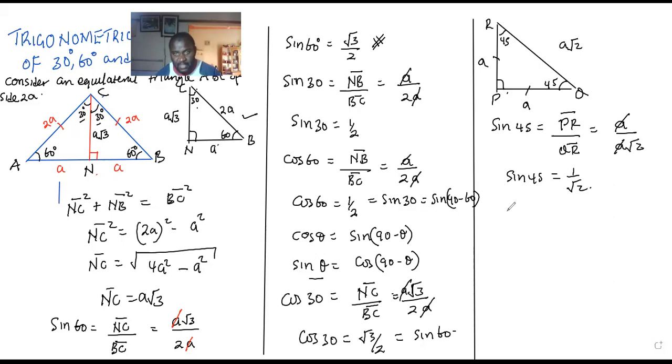If you investigate the cosine of 45, cosine of 45 is going to be PQ out of the hypotenuse, which is QR. And this is also going to be A out of A root 2. When I lose this with that, I can confirm that cosine of 45 is actually also equal to 1 over root 2.